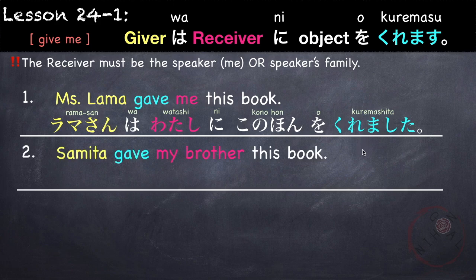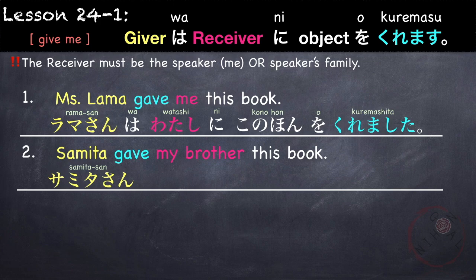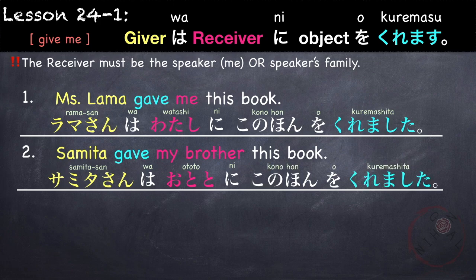Another example: Samita gave my brother this book. The giver is Samita and the receiver is my brother, which is my family. So again we use kuremasu. Samita-san wa, ototo ni, kono hon o, kuremashita.